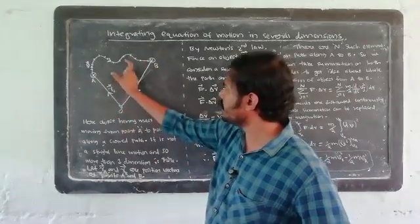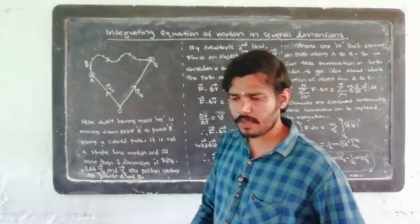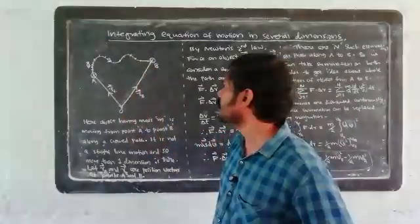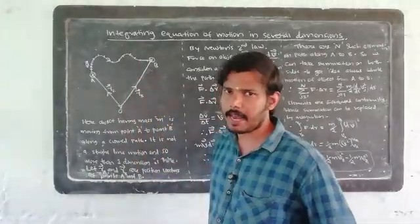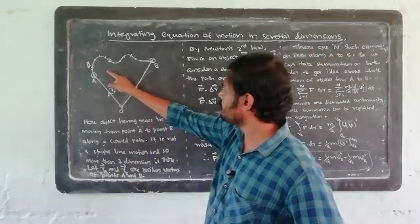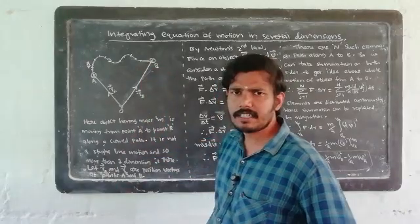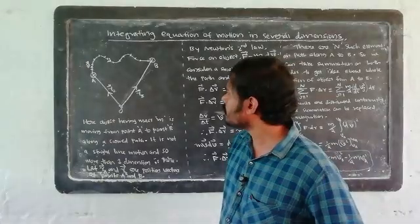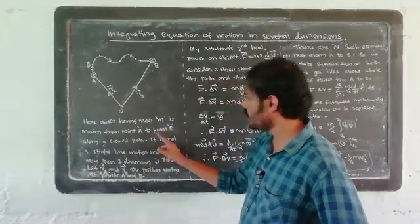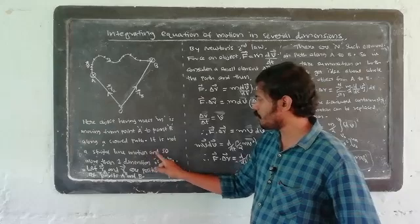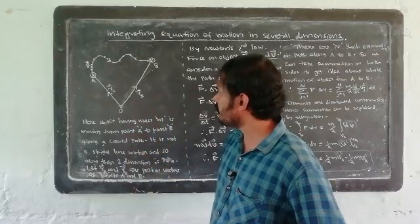There is a straight-line motion and a curved path. If we take the x coordinate, we have x₀, y₀, z₀ — we have a space. The problem is: when motion is more than one dimension along a curved path, how do we describe the motion? There is one-dimensional motion and there is motion in different dimensions. An object having mass M is moving from point A to point B along a curved path — it is not straight-line motion, so more than one dimension is involved.